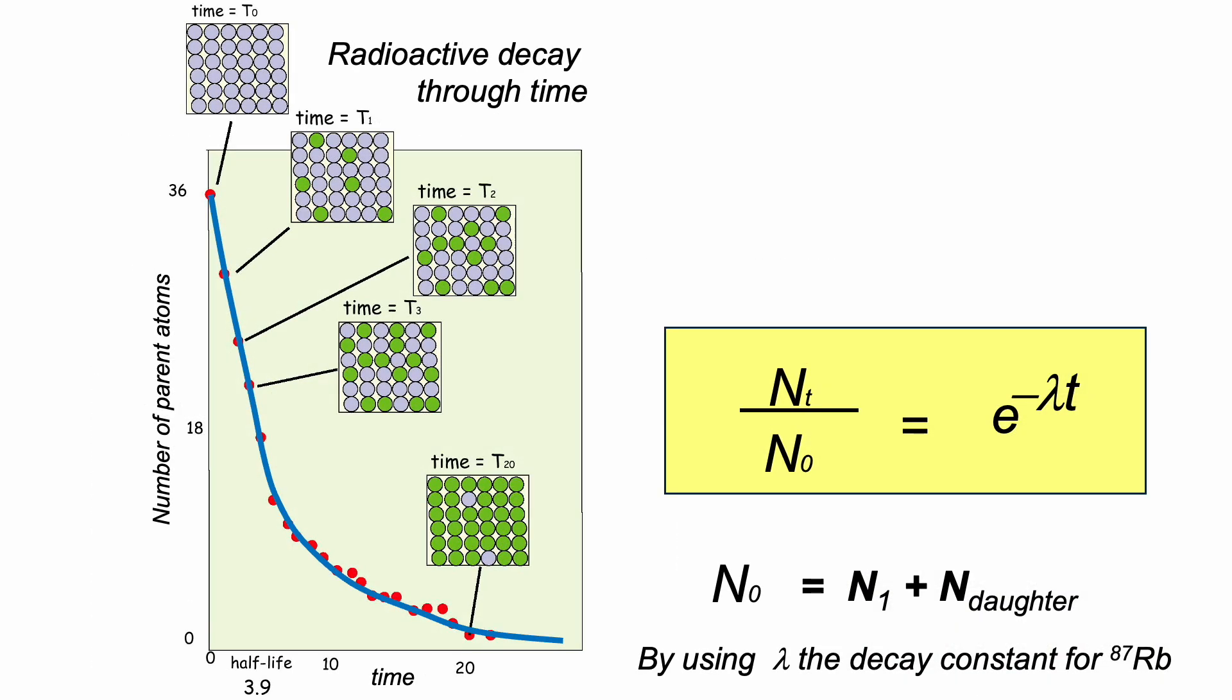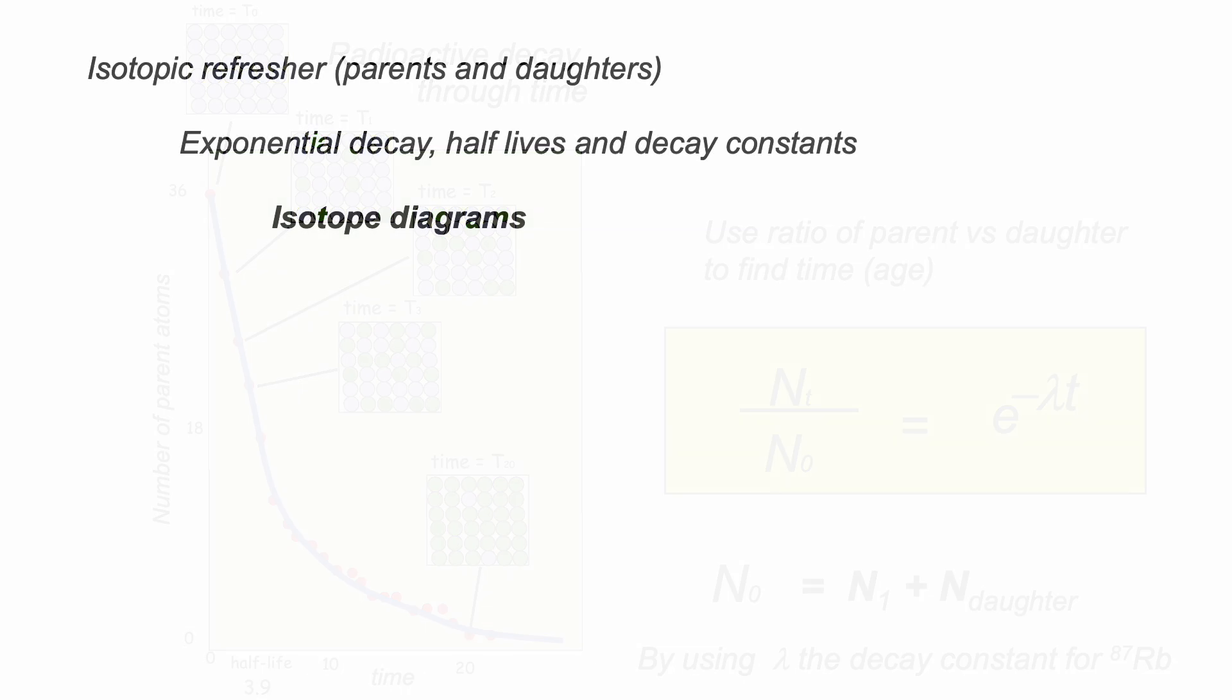So that's exponential decay, the foundation of our geochronometers. Measurements of parent-daughter ratios, and this will get us the age of our rocks. So the next thing is to introduce how data are displayed. I'll take this slowly and in an idealized fashion.